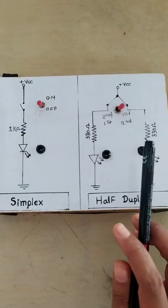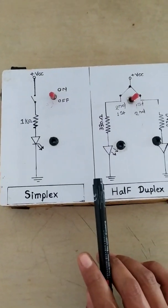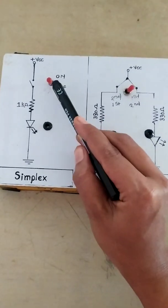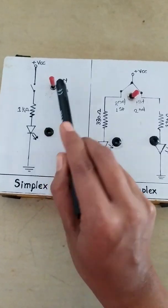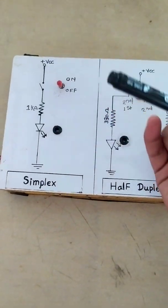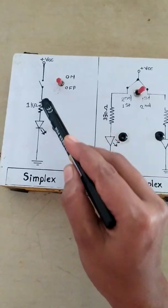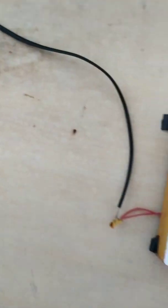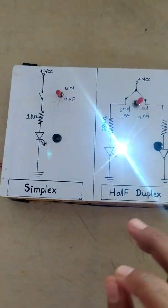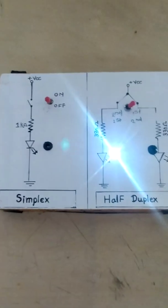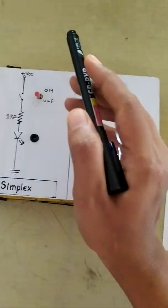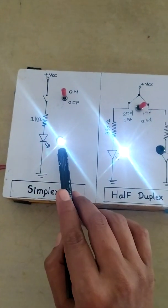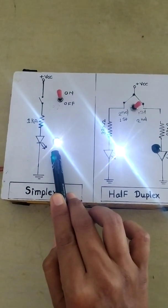So we will see the actual practical. This is the kit for the simplex and half duplex. This switch position is the on position and this position is the off position. We are using one resistor and one LED. So we turn on the kit. First we turn on the switch and we will see the status of the LED. The status of the LED is on.